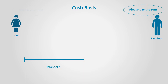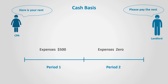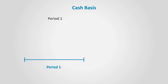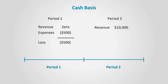Let's assume that the accountant paid the rent for period 1 but failed to pay it in period 2. According to cash basis, expenses are recognized when paid. So period 1's expenses are $500, while in period 2, no expenses are recognized since no payment is made for rent. To summarize the results: period 1's revenue is $0 and its expenses are $500, so the result is a loss of $500, even though all the work is done in this period. In period 2, revenue is $10,000 since cash is collected, and expenses are $0 since cash is not paid for rent. So the net income for period 2 is $10,000, although no effort was done in this period.